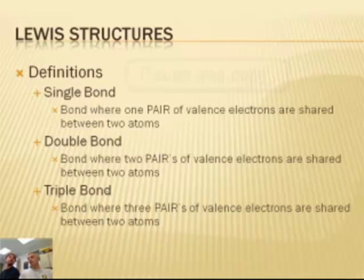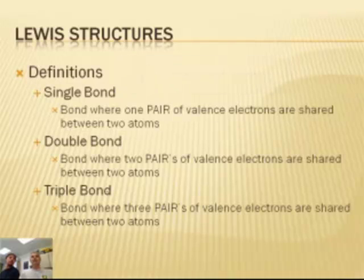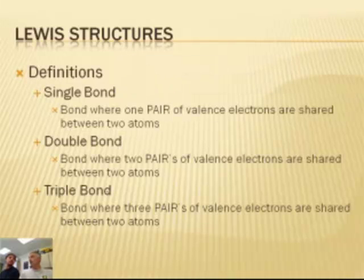Single bond, double bond, triple bond. Probably should pause the video and write these down. Okay, the key thing to understand with these bonds is that electrons are shared in pairs. One bond is one pair. And a pair means? Two. Two electrons.